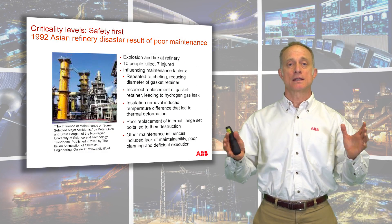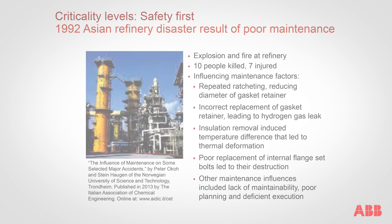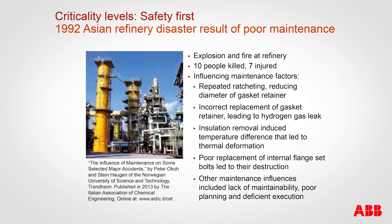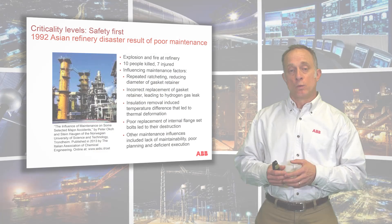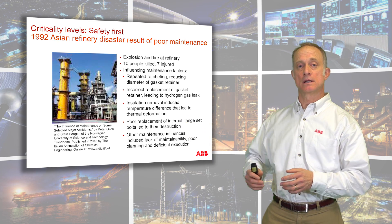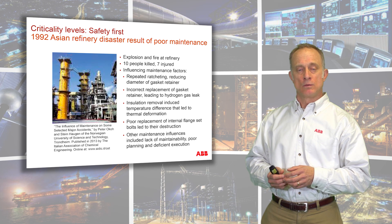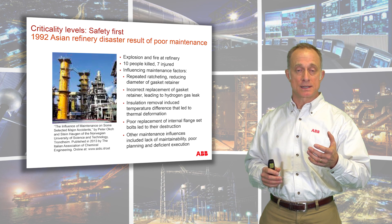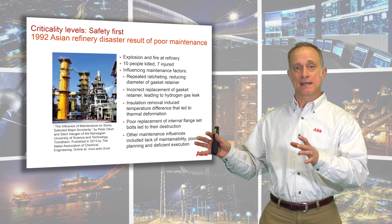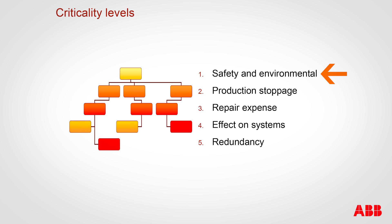For criticality, let me state this clearly — the first consideration should always be safety. Here we have an example of a refinery in Asia that exploded in 1992, killing a number of people and injuring many more. When the analysis was done on why the explosion occurred, it was determined that it was really a maintenance failure — repeated ratcheting reducing the diameter of a gasket retainer, which could be an example of too much preventive maintenance. The right maintenance approaches weren't taken and it led to a disaster. Safety and environmental are always at the top level of consideration.